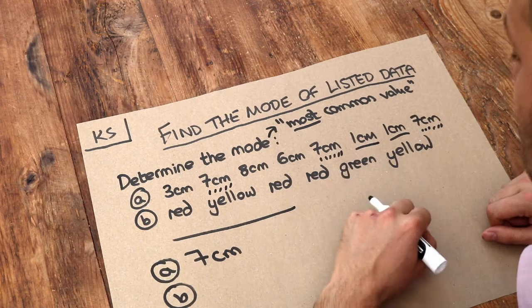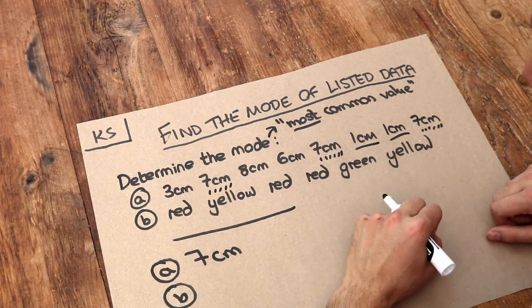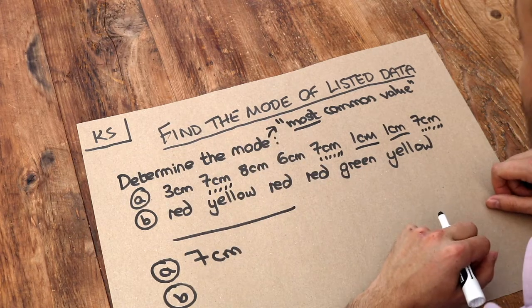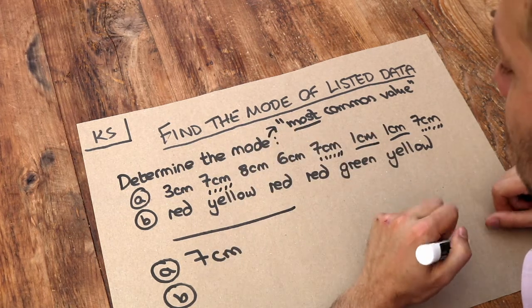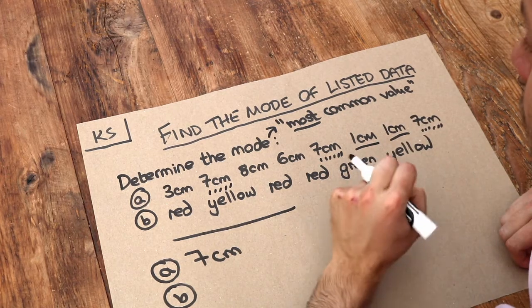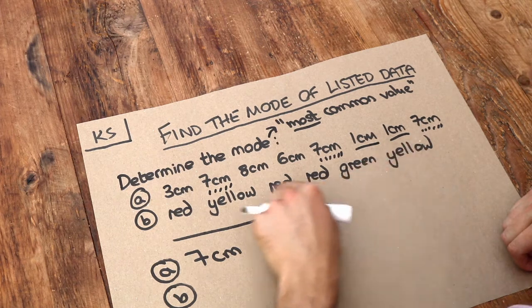Now what about this second question? We don't have to have numeric values. We can have worded values, also known as categorical values, and still find the mode. Whereas other averages like the median and the mean require numerical values like these numbers at the top. So the mode is a useful average to use when we don't have numeric data like we have here.